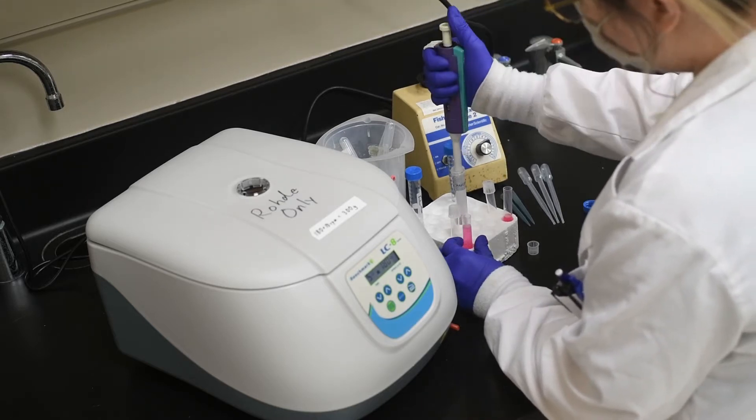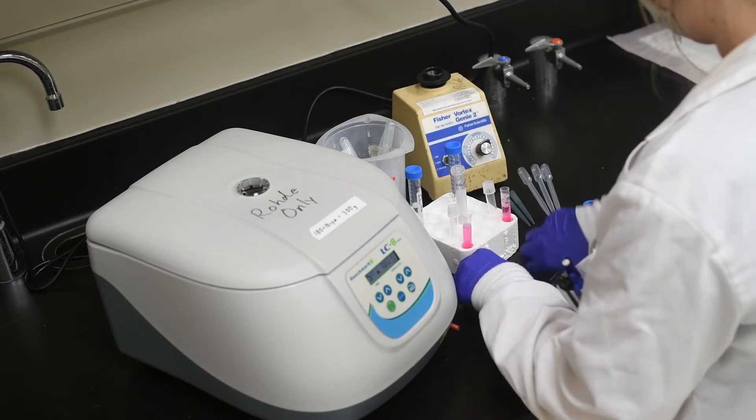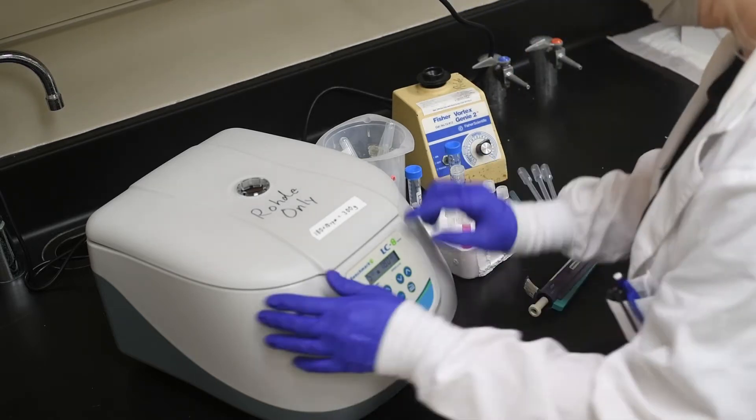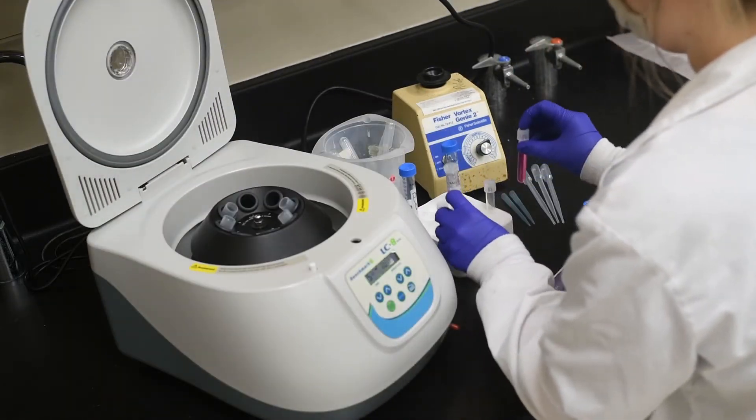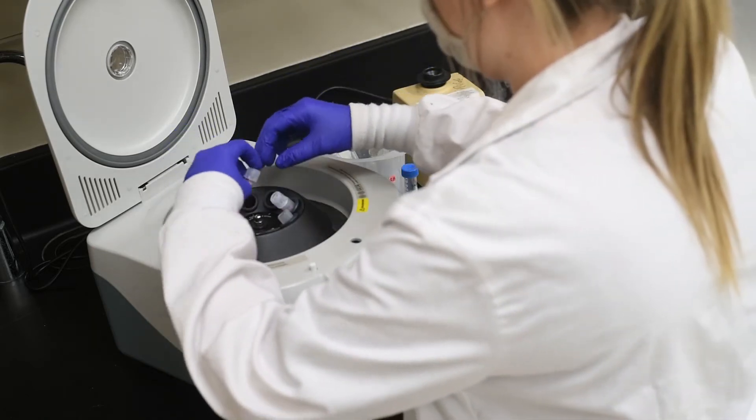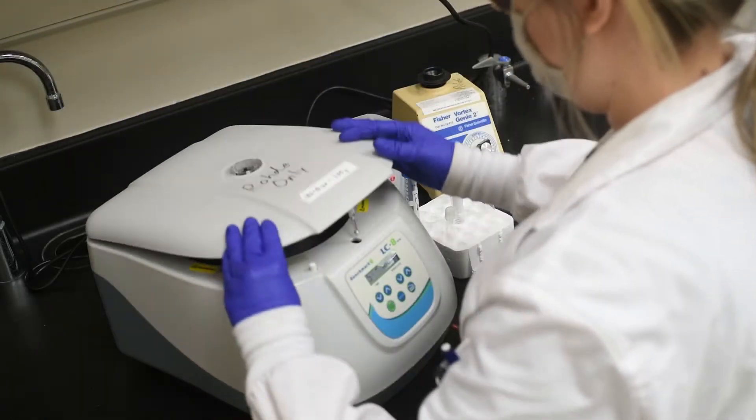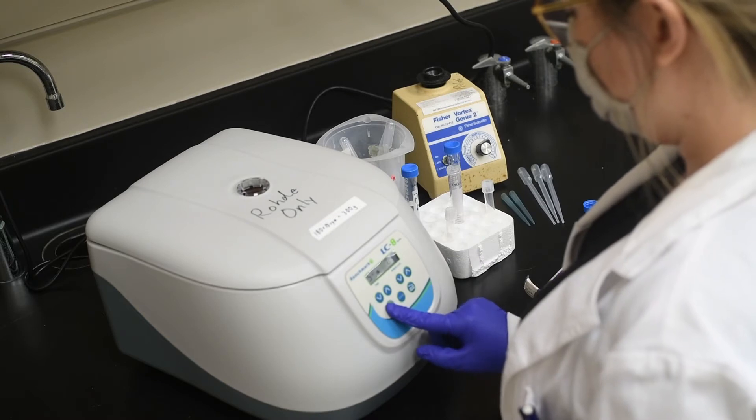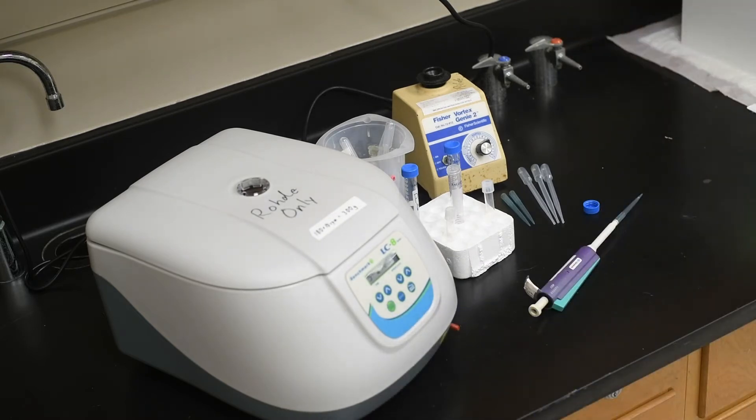In my 15 milliliter tube, there are 8 milliliters of media and 2.8 million cells. Splitting the volume in half, I will be able to create two samples for this protocol. I transferred 4 milliliters of media containing 1.5 million cells to two 5-milliliter conical tubes.